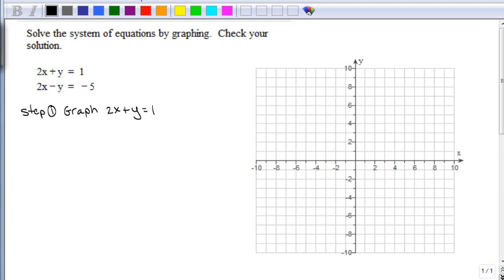The third method is using y equals mx plus b. Making a table will work fine, or using y equals mx plus b. The only one I would avoid is the intercept method. But I'm going to go ahead and use y equals mx plus b.